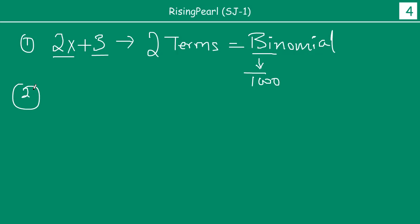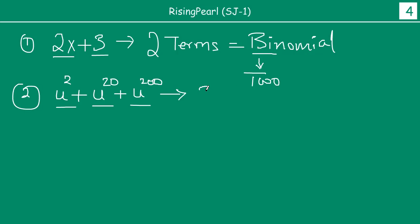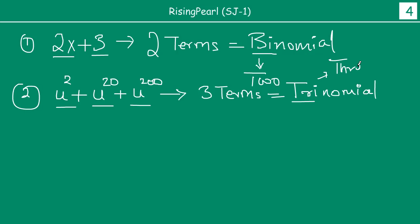Ek aur example lete hain. How about the example we saw earlier: u to the power 2, u to the power 20, and u to the power 200. Is polynomial ko, dosto, hum bolte hain trinomial. Kiyo? Because there are 3 terms. U to the power 2 is the first term, u to the power 20 is the second term, and u to the power 200 is the third term. So this has 3 terms. Agar 3 terms hain hum isko bolte hain trinomial. Tri stands for 3. So depending on the number of terms that you get, we are actually classifying the polynomial as binomial or trinomial.